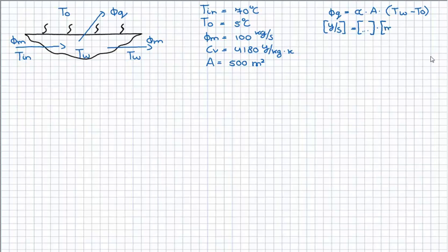One exercise was to determine the units of alpha. If you write out the units of the other quantities, you can easily compute the units of alpha, which is joules per square meter per Kelvin per second. Alpha was given as 1200.